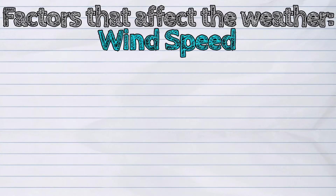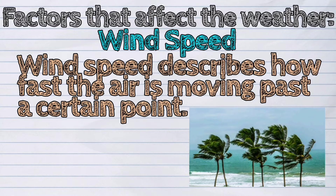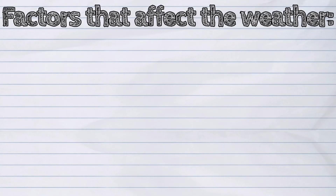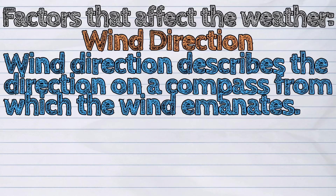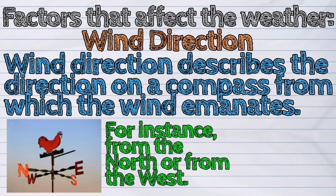Wind speed is also one of the factors. Wind speed describes how fast the air is moving past a certain point. Lastly, wind direction describes the direction on a compass from which the wind emanates — for instance, from the north or from the west.